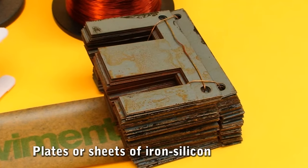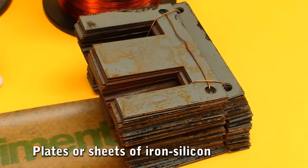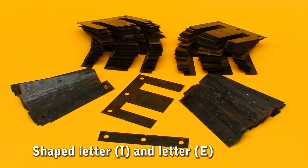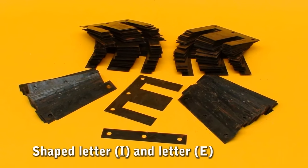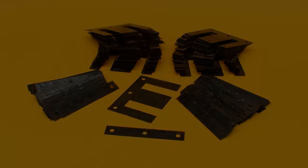Silicon iron sheets. These silicon iron sheets come in the shape of the letter I and the letter E interpersed, forming the core of the transformer.